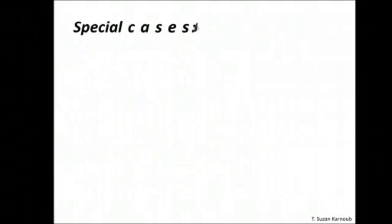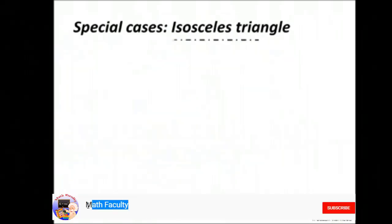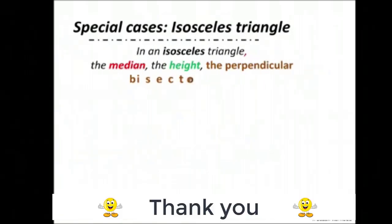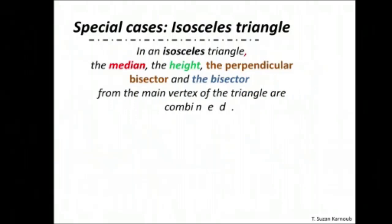In an isosceles triangle, the median, the height, the perpendicular bisector, and the bisector from the main vertex are combined. When I draw from the main vertex A, this line is the height, the median, the bisector, and the perpendicular bisector. They are all combined on the same line.